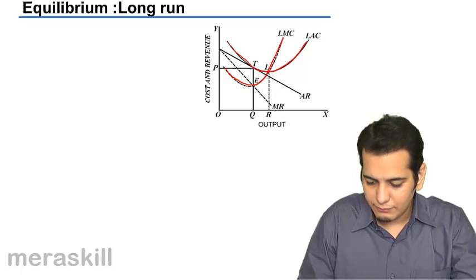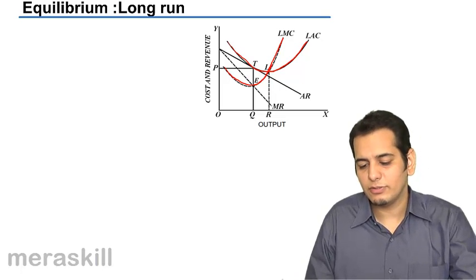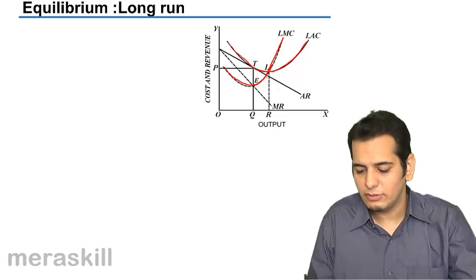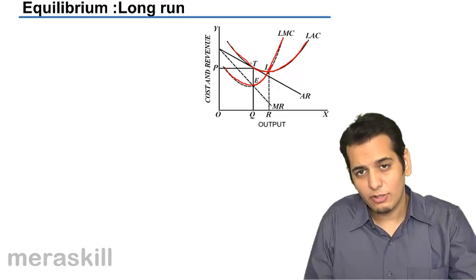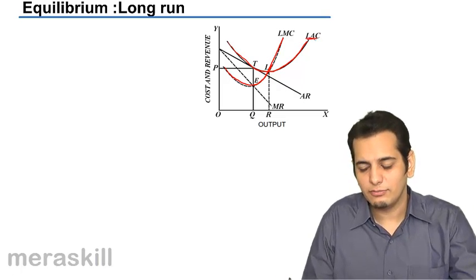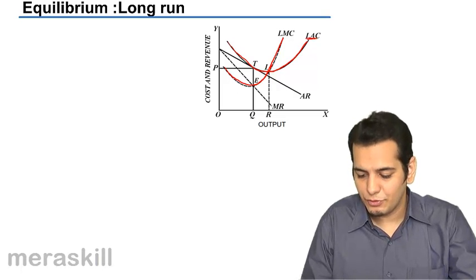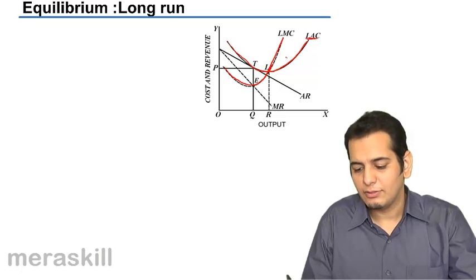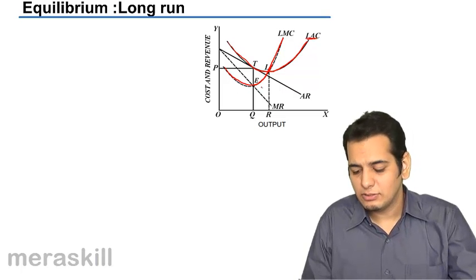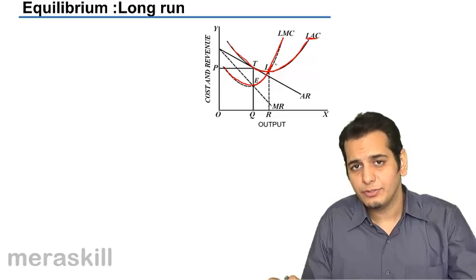You can see that the marginal cost curve, that is the long run marginal cost curve, is cutting the long run average cost curve where LAC is minimum. Here the LAC is minimum and thus long run marginal cost curve is cutting it where it is minimum.